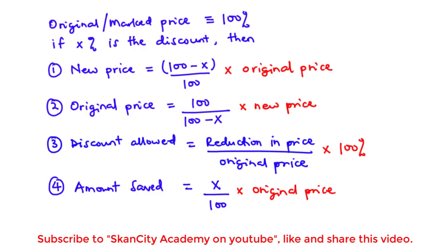Basically, the marked price and the original price refer to the same thing. There are two types of discounts: the cash discount, which is given to the buyer because he or she makes an immediate payment, and the trade discount, which is given to a fellow trader on prices of goods bought.